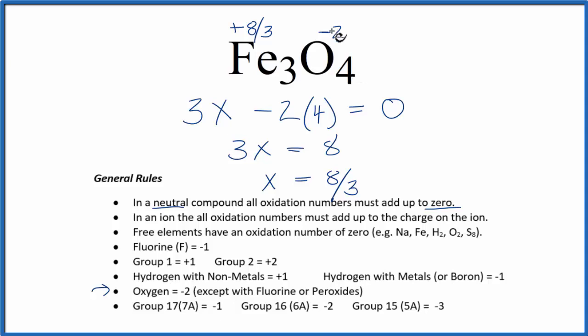If you multiply 4 by minus 2, that gives you minus 8. If you multiply 3 by 8 thirds, that gives you plus 8. Minus 8 and plus 8, that adds up to zero. And that makes sense,